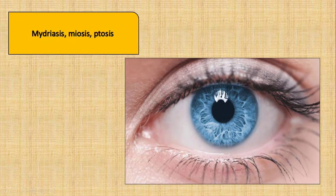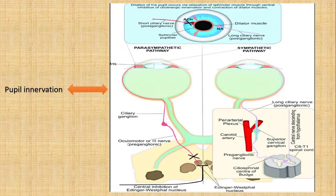Hello everybody, today we are going to talk about mydriasis, miosis, and ptosis. We have two types of pupil innervation: parasympathetic pathway and sympathetic pathway. The parasympathetic pathway is carried by the oculomotor, or third cranial nerve, and originates from the Edinger-Westphal nuclei.